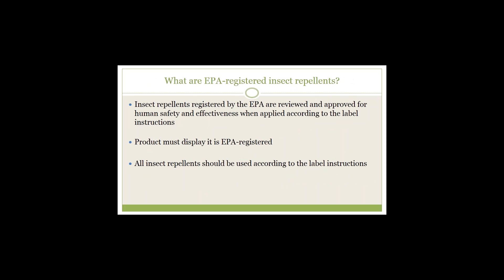What are EPA-registered insect repellents? Insect repellents registered by the Environmental Protection Agency indicate that the materials and active ingredients have been reviewed and approved for human safety and effectiveness when applied according to label instructions. EPA-registered repellents will say 'EPA registered' on the product label. Many insect repellents are safe for pregnant women and children to use, but be sure to check the product label for any warnings and follow the instructions closely.